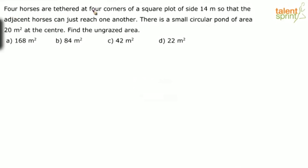Four horses are tethered at four corners of a square plot of side 14 meters so that the adjacent horses can just reach one another, and there is a small circular pond of area 20 meters square at the center. Find the ungrazed area.